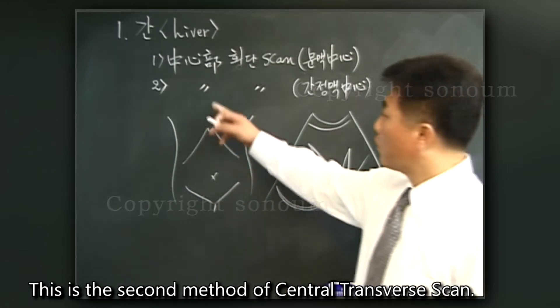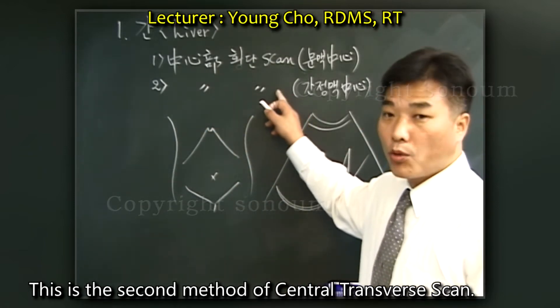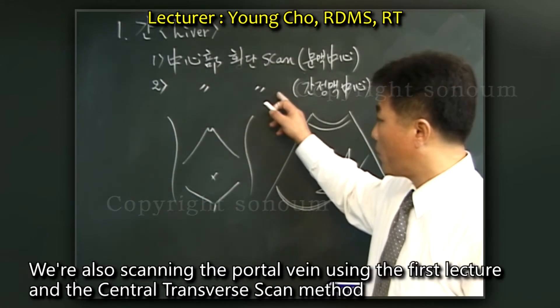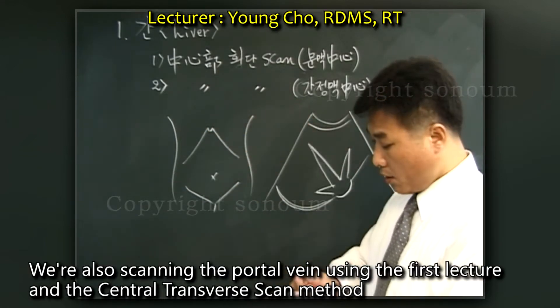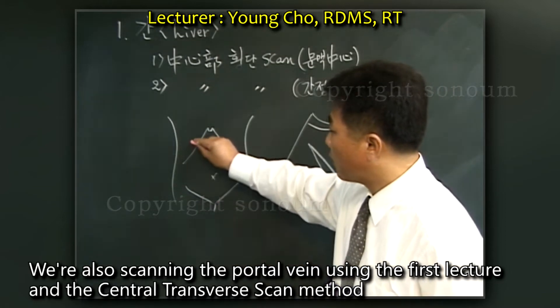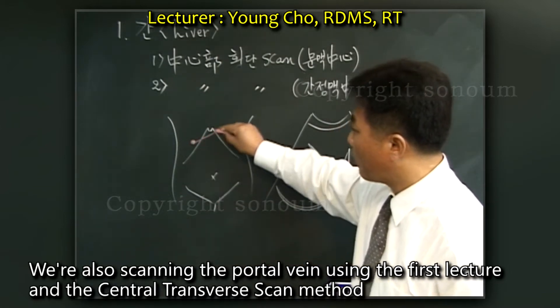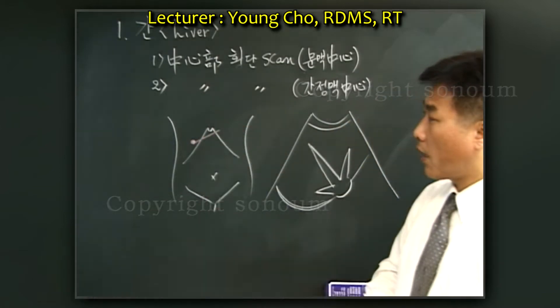This is the second method of central transverse scan. Like the first lecture, it is a scan to see the portal vein using the central transverse scan method.